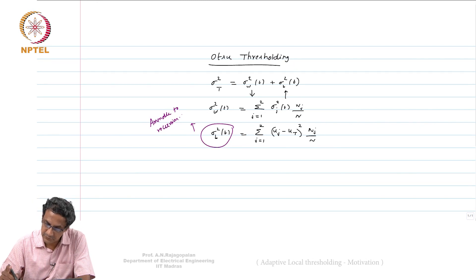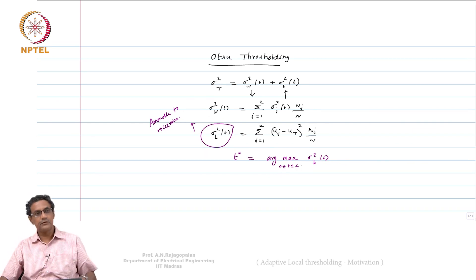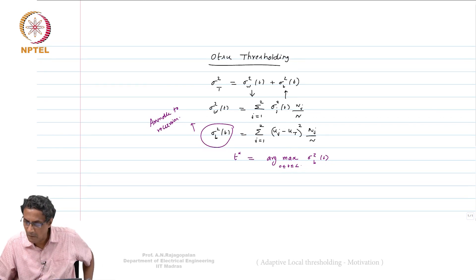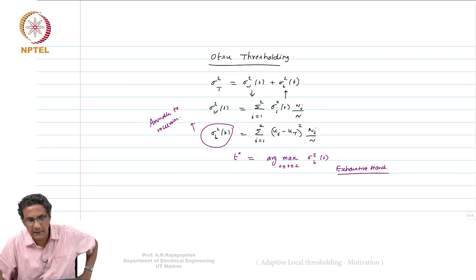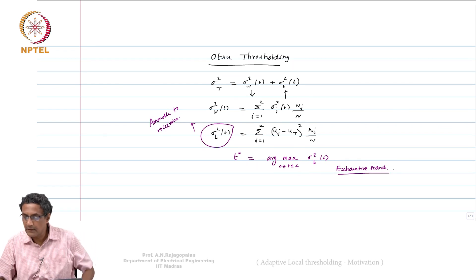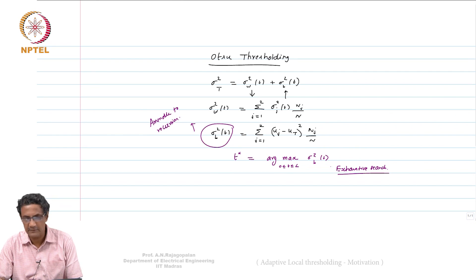We solve for t*, the optimal threshold, as: t* = argmax σ²_B(t), where 0 ≤ t ≤ L. This is an exhaustive search — you search through all values of t, and the value for which σ²_B is maximum is your t*.